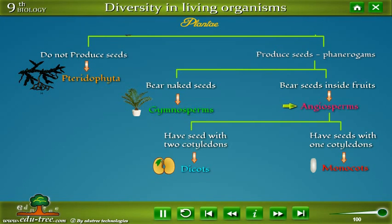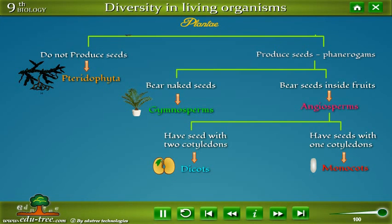Angiosperms are of two types: plants having seeds with two cotyledons, called Dicot plants, and plants having seeds with one cotyledon, called Monocot plants.